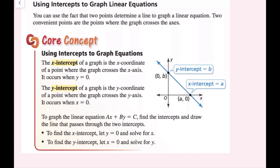Now we're going to use intercepts to graph linear equations. You can use the fact that two points determine a line to graph a linear equation. Two convenient points are where the graph crosses the axes. The x-intercept is the x-coordinate where the graph crosses the x-axis — it occurs when y equals 0. The y-intercept is the y-coordinate where the graph crosses the y-axis — it occurs when x equals 0. To graph ax plus by equals c, find the intercepts and draw a line through them.